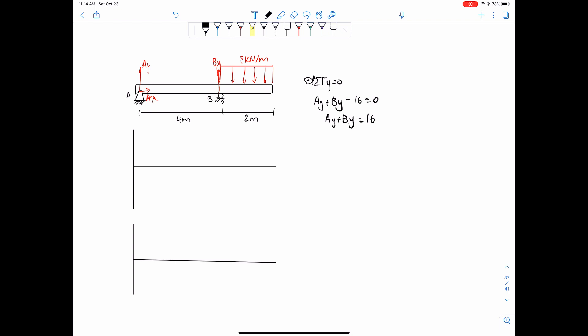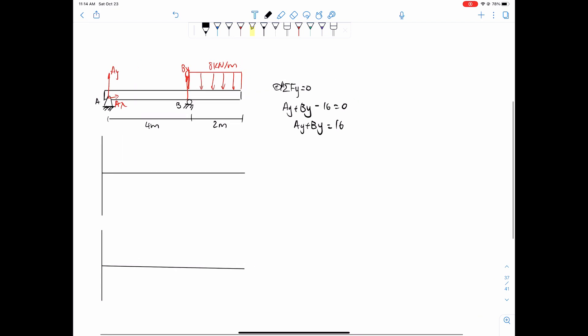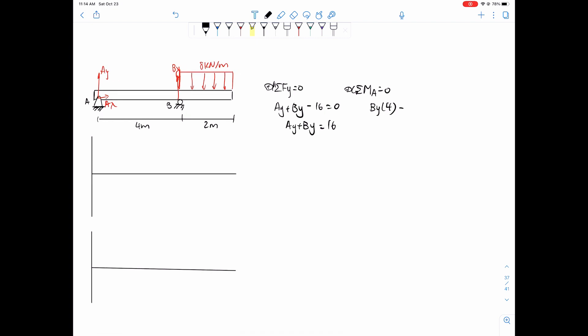So next what we want to find out is just keep solving the reaction. So we'll take a sum of moments around A. Counterclockwise equals positive, so that equals zero. So we have By times 4 and that wants to push it in this direction, which is positive. Minus 8 times 2 from the distributed load times 5.